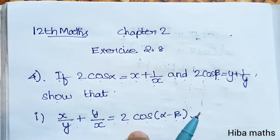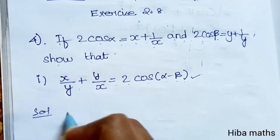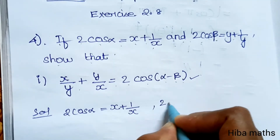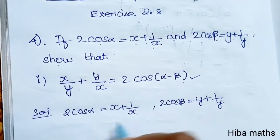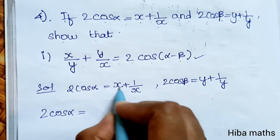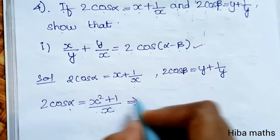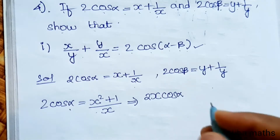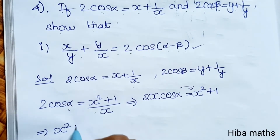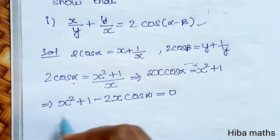To prove this, we will solve for x and y. Starting with 2cosα equals x plus 1/x. Taking LCM, we get 2x cosα equals x² plus 1 divided by x. So x² plus 1 divided by x, which gives us x² - 2x cosα plus 1 equals 0.